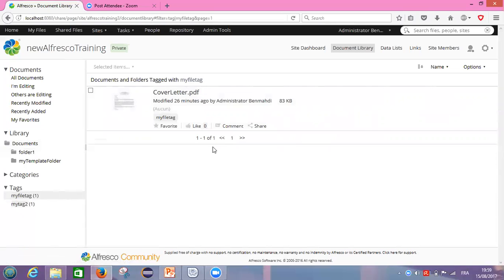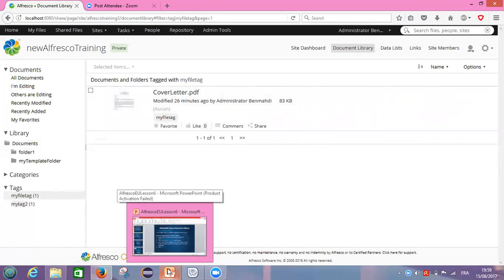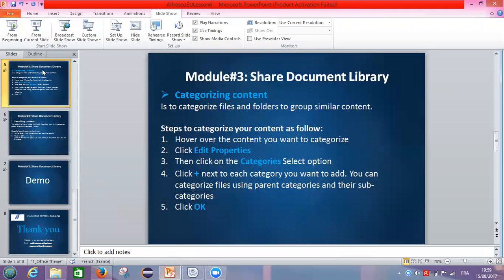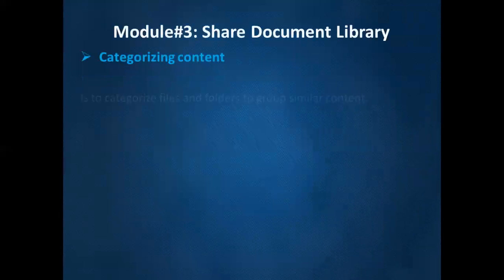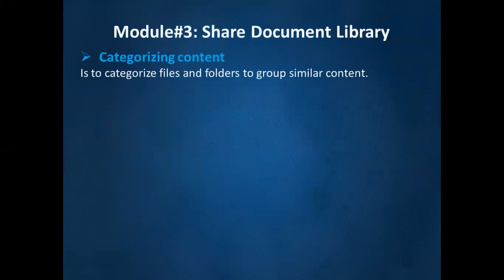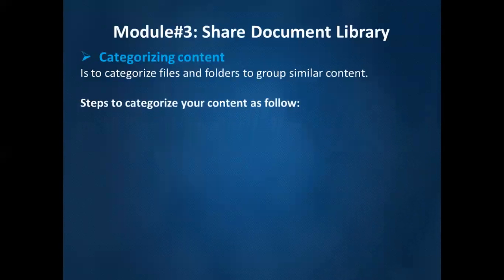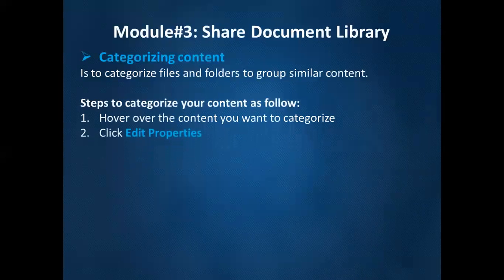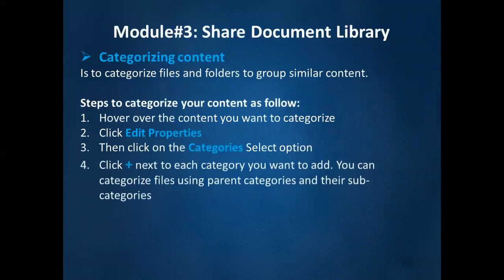Now let's see how to categorize our content. Categorizing content means grouping files and folders to group similar content. Steps to categorize your content: hover over the content you want to categorize, click Edit Properties, then click on the Categories Select option, click Plus next to each category you want to add. You can categorize files using parent categories and their subcategories. Click OK.